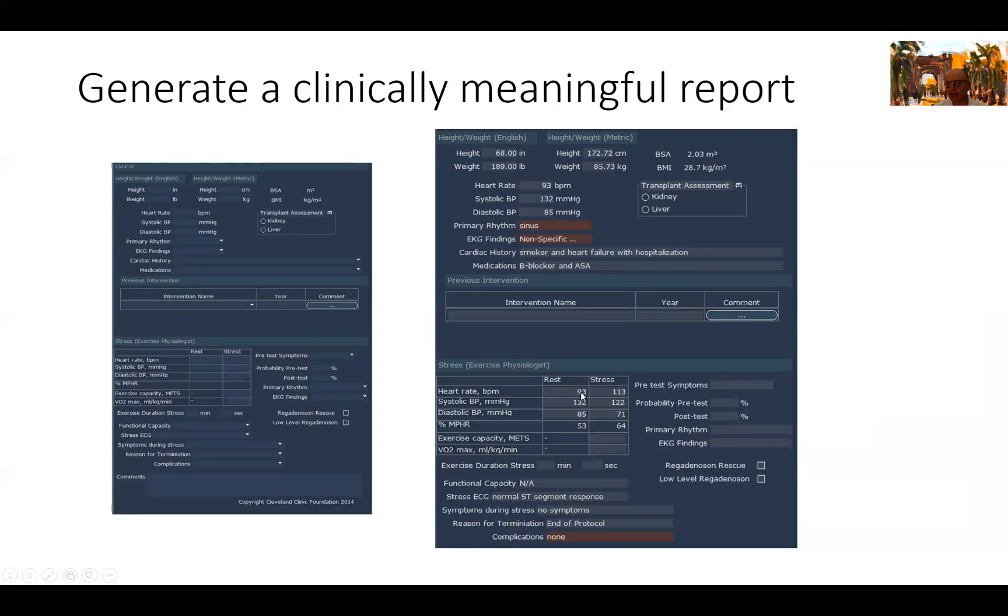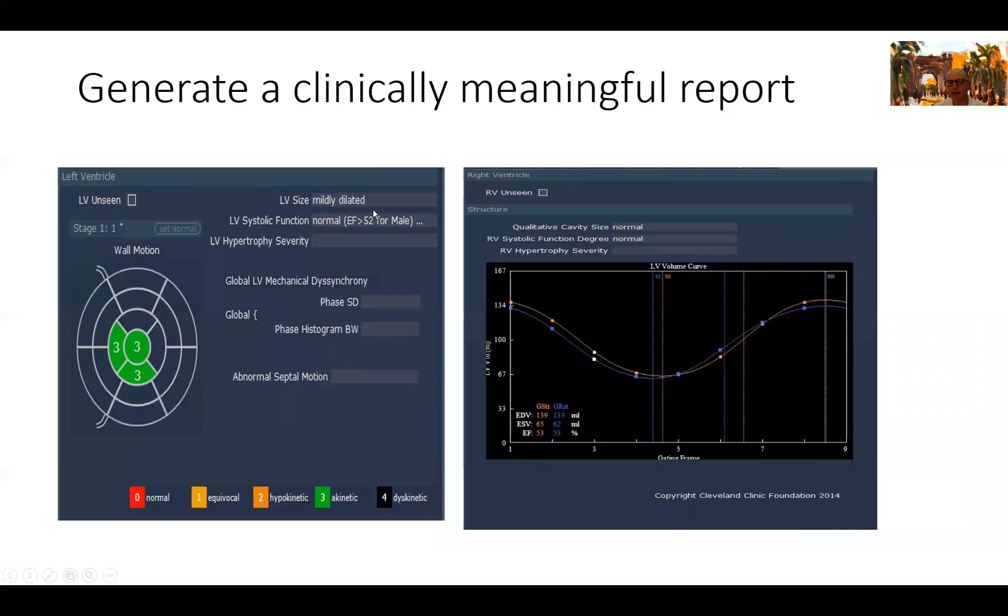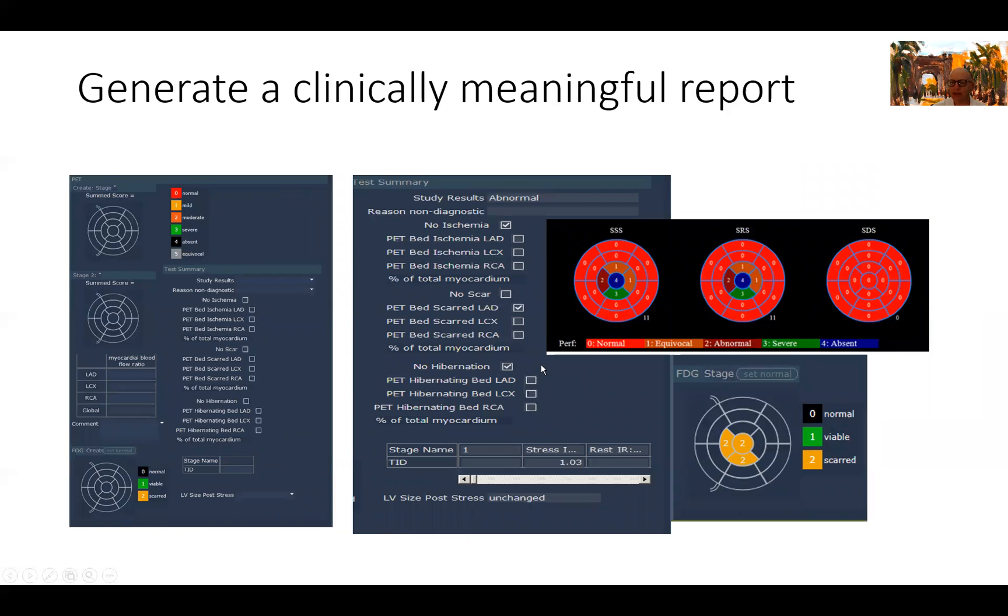And then we look at the stress physiology. Rest images: heart rate of 93, stress 113. Blood pressure here dropped with regadenoson, not an unexpected finding as we talked about before. No ST-T changes. We report the EF. Here, EF was slightly abnormal, so we reported it right here. Mildly dilated ventricle with wall motion abnormality present, with all these segments akinetic. I show you here the right ventricle, normal rest and stress, and the volumes and the ejection fraction for this patient.